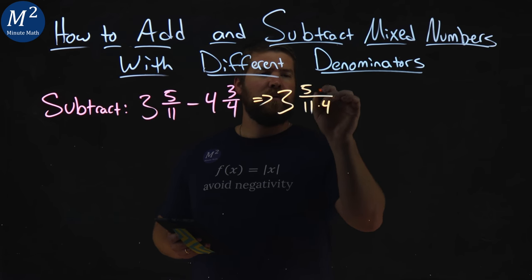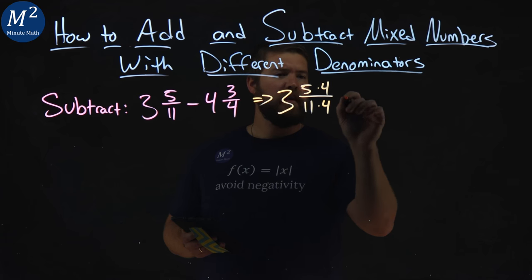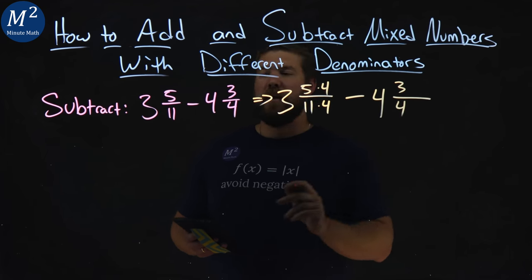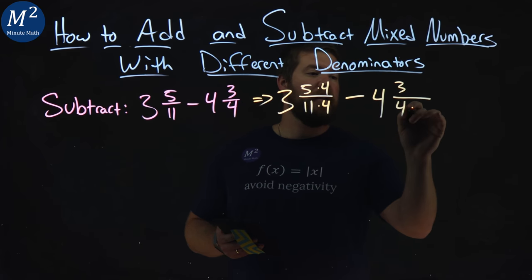So, I take the 11, multiply it by 4, and the numerator by 4. Second number, 4 and 3 fourths, same thing, but we're multiplying the denominator and numerator by 11.